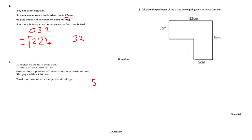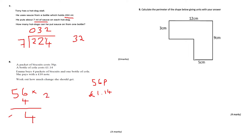Question 8: a packet of biscuits costs 56p, a bottle of cola costs £1.14. Emma buys 4 packets of biscuits and 1 bottle of cola, paying with a £10 note. 4 times 56p: 4 times 6 is 24, carry the 2; 4 times 5 is 20, add 2 is 22. So 4 packets of biscuits cost 224p or £2.24.